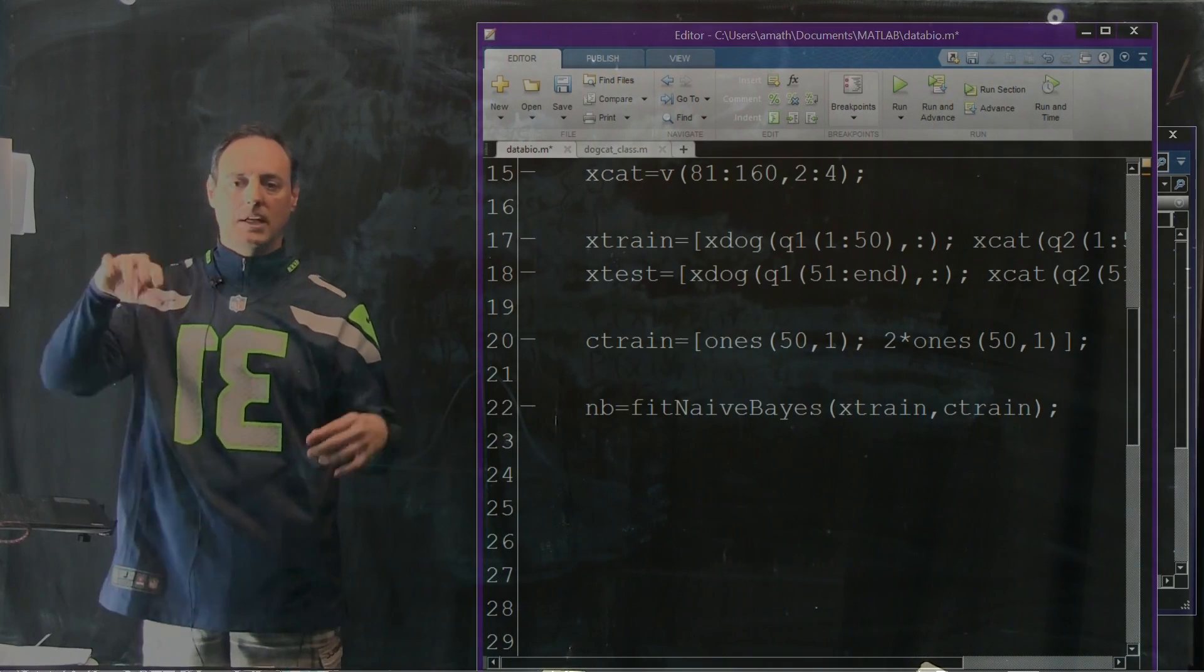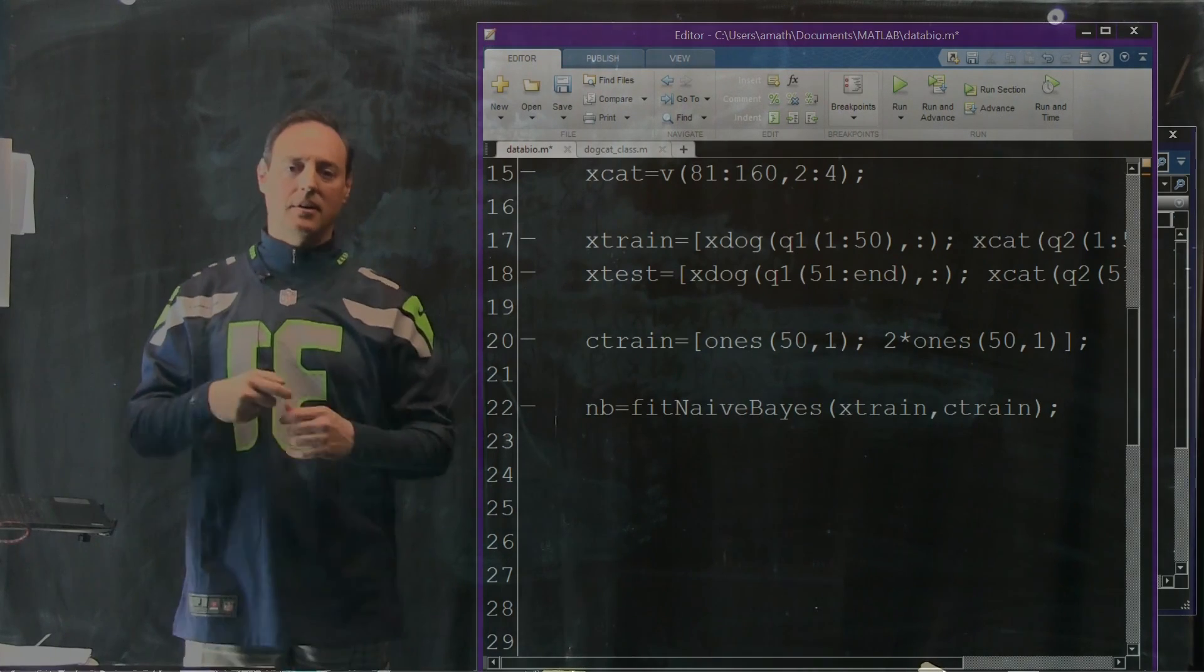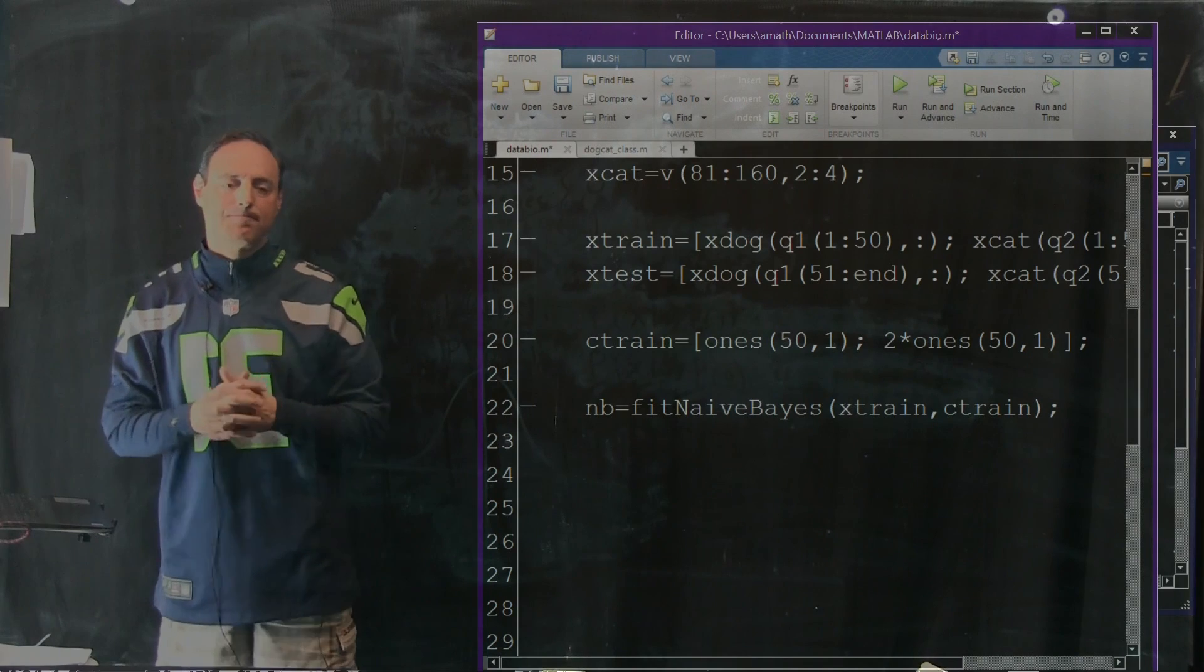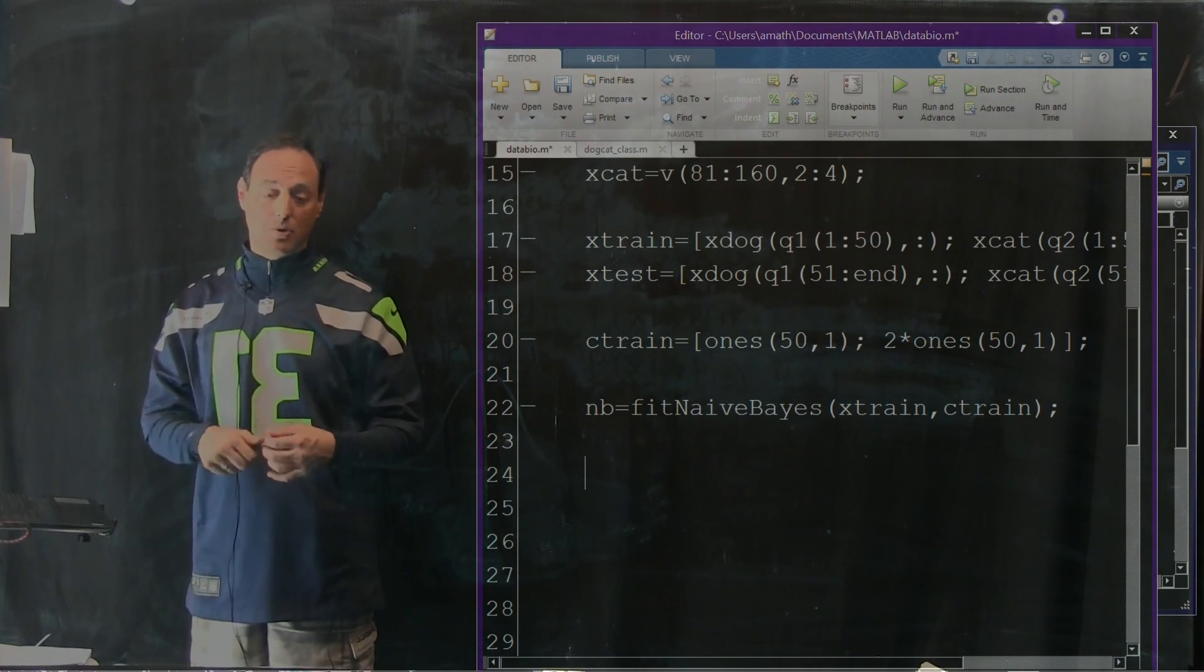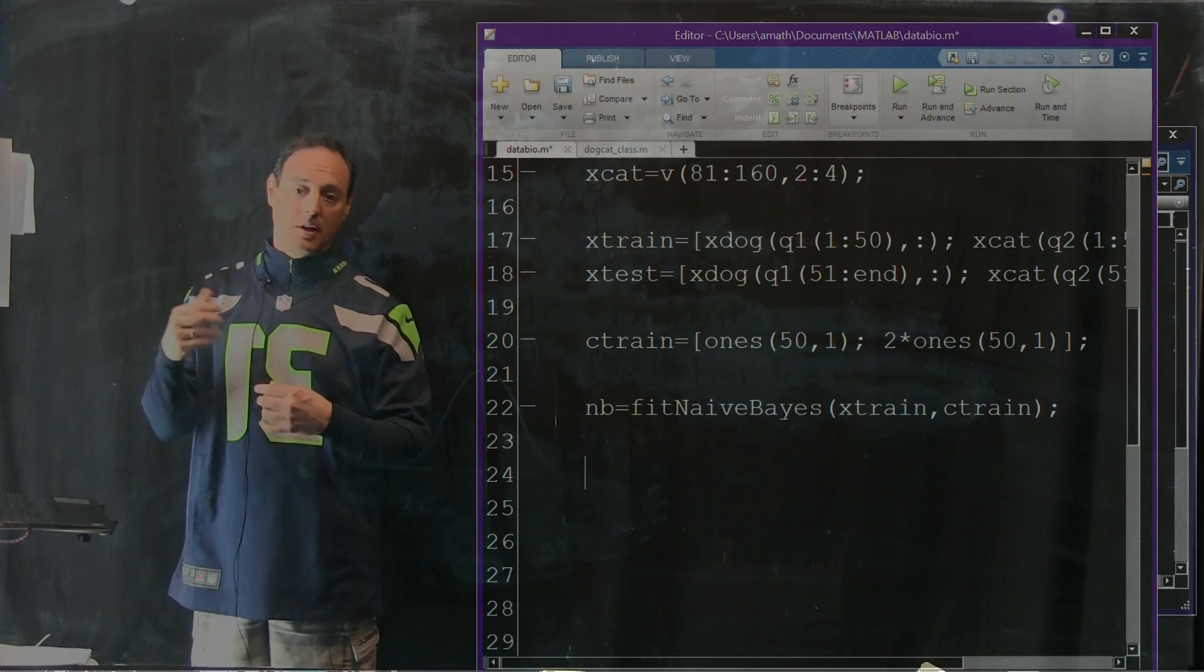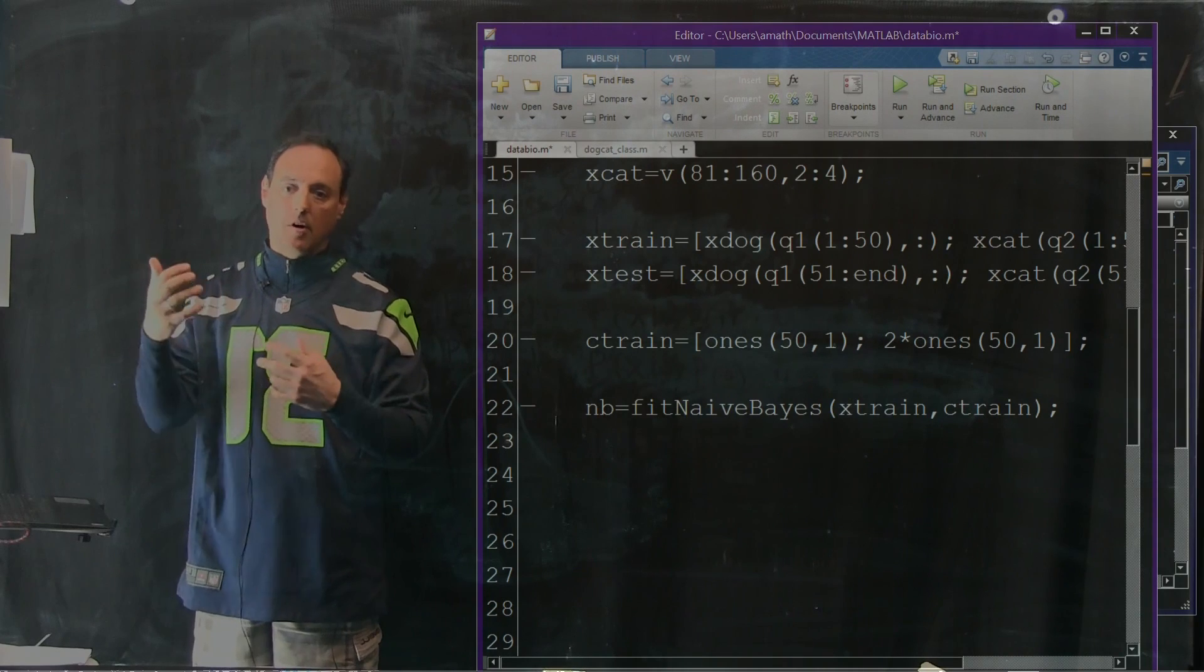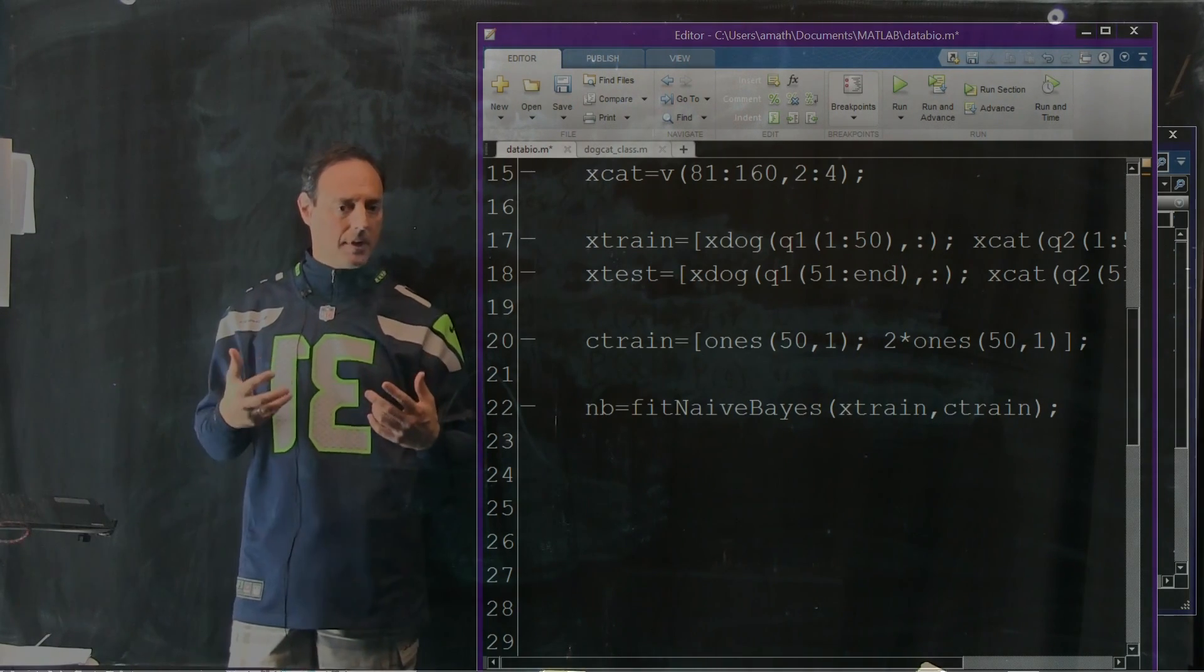When you do this, it will actually go through, and it will, in a principled way, do exactly that algorithm. It will say, look, I have these two classes. Let me look at what's the probability of class 1, what's the probability of class 2, what's the conditional probability of x given class 1, or of a 1 given x, and of a second class given x. So it can compute these things out. It does so with the training data, because you've labeled it.